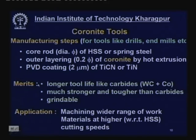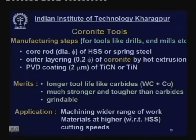Coronite tools offer longer tool life like carbides, are much stronger and tougher than carbides because of the high speed steel content, and are grindable — they can be resharpened multiple times unlike stellite, which cannot be reground and has become obsolete. Applications include machining a wider range of work materials at higher cutting speeds than high speed steel, increasing productivity.